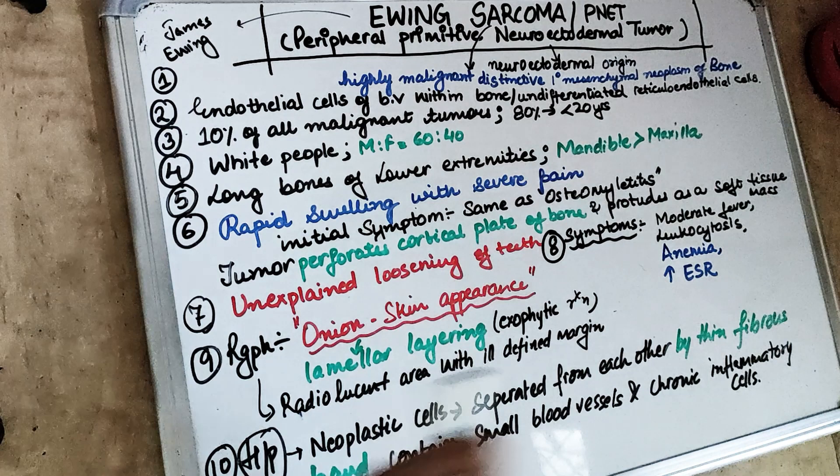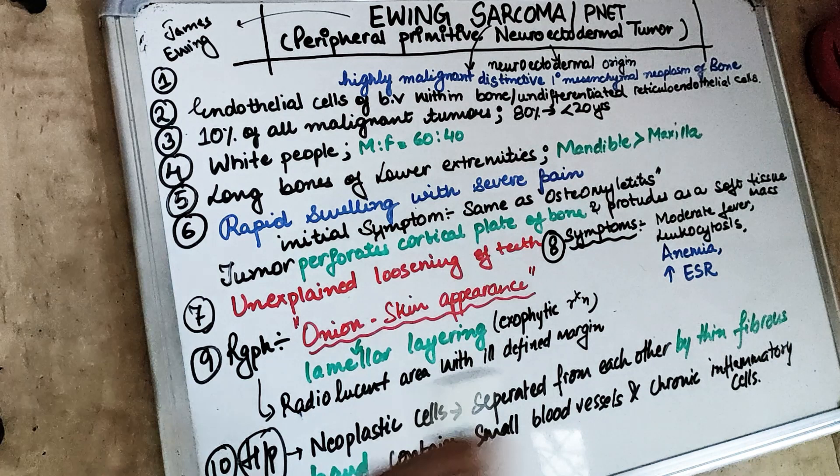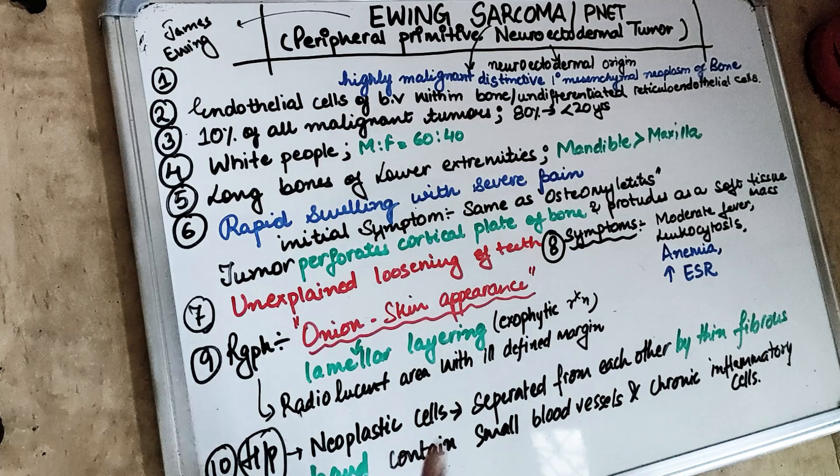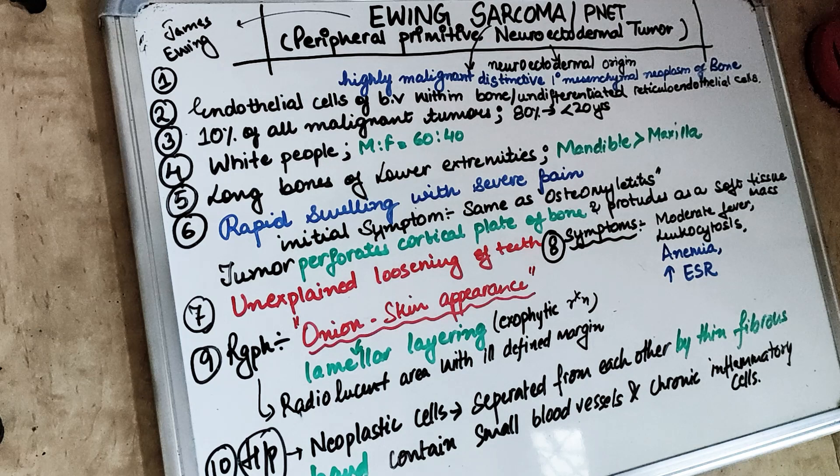Welcome back to the 10 in 10 series where we cover each topic under 10 headings in 10 minutes. Today's topic is Ewing Sarcoma, or we can say PNET — the peripheral primitive neuroectodermal tumours. Before we get started, make sure you subscribe to our channel and click on the bell icon so that you don't miss any of our notifications.